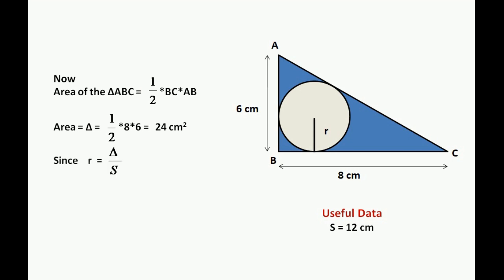Since we know that R equals del by S, and del and S are calculated as 24 cm squared and 12 cm respectively, the inradius equals 24 by 12, which equals 2 cm. And this is our answer.